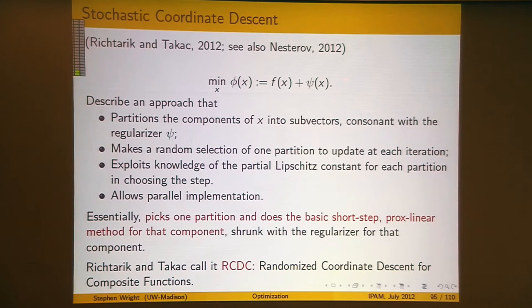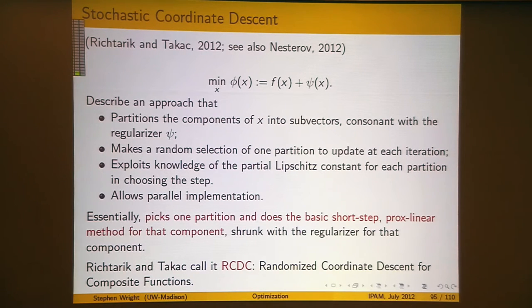Here's the setting. I'm going to consider a regularized case, setting tau equals 1 in the regularization for simplicity. I'm going to assume that you can partition x into sub-vectors in a way that's consistent with the regularizer — referring to the group sparse regularizer setup from a few slides ago. I'll assume that psi can be partitioned into the sum of psi_i's, where each psi_i depends on just a sub-vector of x and all the sub-vectors are disjoint.